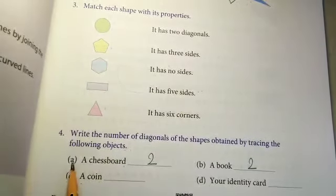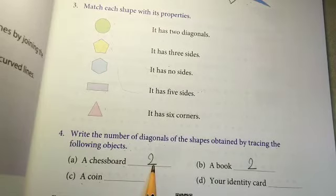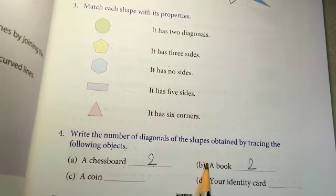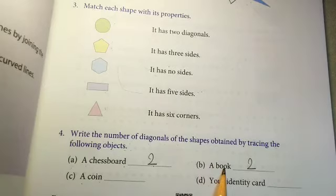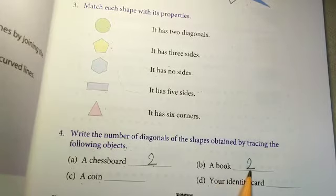Here option A is a chess board. We all know a shape of chess board is square. Here opposite sides if we will join we get two diagonals. So we will write two here. Next one is a book. A shape of book is rectangle. Here also opposite sides we will join we will get two diagonals. So here also we will write two.